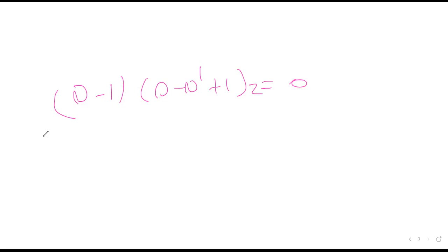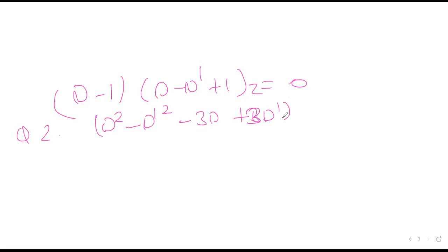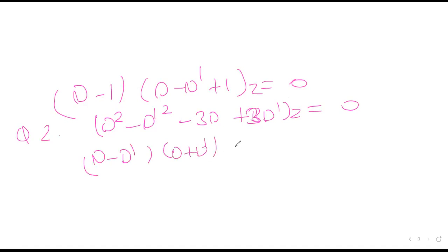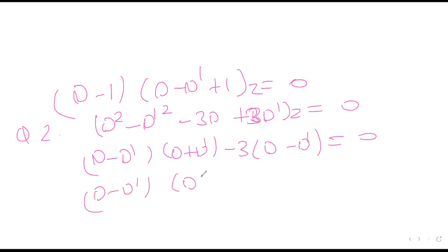Let's try question number two: D² - D'² - 3D + 3D' = 0. This is a very easy question because directly I can see (D - D')(D + D') - 3(D - D') = 0, giving factors (D - D')(D + D' - 3) = 0. But let's say I'm not able to see that directly — what will I do then?